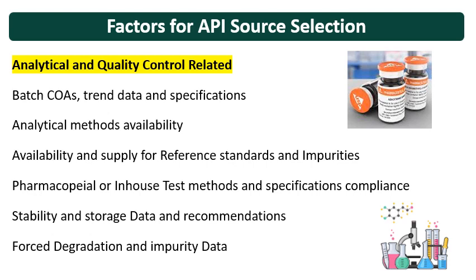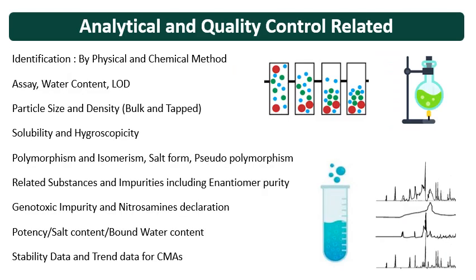Then consider pharmacopoeial or in-house test method and specification compliance. The main important item is stability and storage data and the recommendations provided by the API supplier, then force degradation data and impurity data. So the analytical or quality control related factors are mainly factors related to testing and control. Then there are also formulation-related aspects and critical quality attributes related aspects to consider, using the COA which will have all these parameters listed.